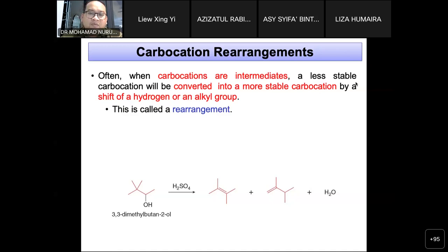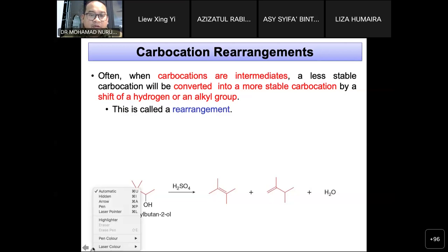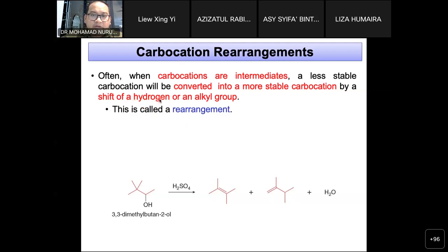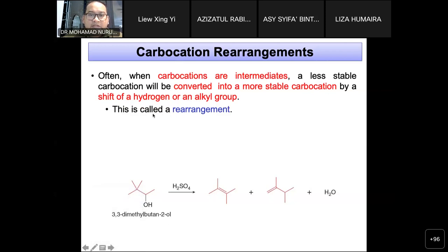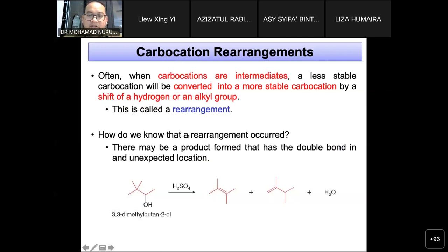For tonight we will discuss carbocation rearrangements, which is equally important. Often when carbocations are formed, the less stable carbocation will convert into a more stable carbocation by the shift of hydrogens or alkyl halides — this is called rearrangement. You can identify that rearrangement has occurred when a product forms that has a double bond at an unexpected location, because a very stable carbocation was formed.